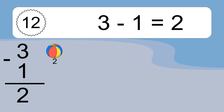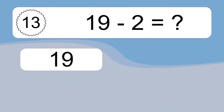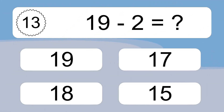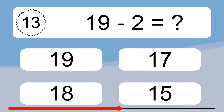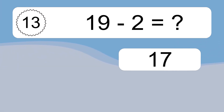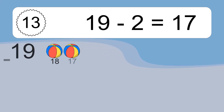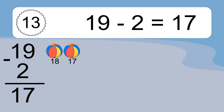3 minus 1 equals 2. Let's count it. 2. 19 minus 2 equals what? 19 minus 2 equals 17. Let's count it. 18, 17.